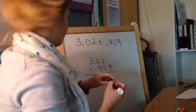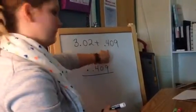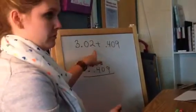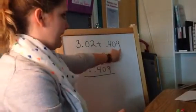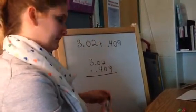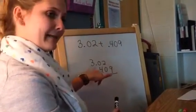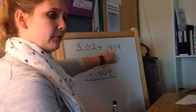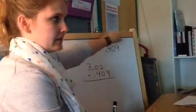Is that a 4 or a 1? This is the end of the first one. This is a 2, this is a 9. No. Oh, it's a plus sign. Okay. So we have 3 and 2 hundredths plus 409 thousandths.